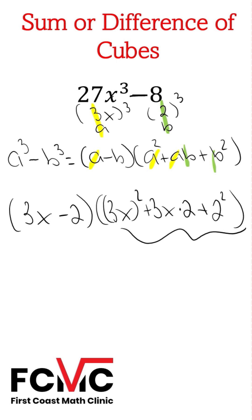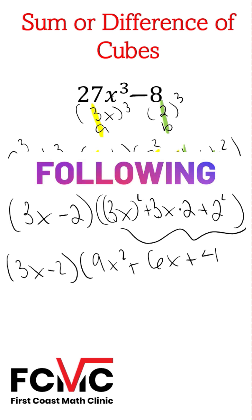Let's simplify this second set of parentheses. So I'll get 3x minus 2 times 3x squared is 9x squared plus 3x times 2 is going to give us 6x plus 2 squared is 4. And this is our factored difference of cubes.